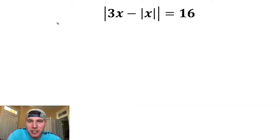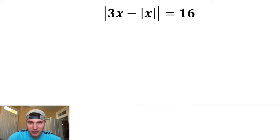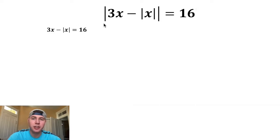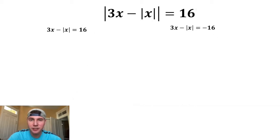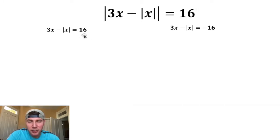Let's solve for x in this equation — it has an absolute value inside of an absolute value. To get rid of the outer absolute value, we take the stuff inside and set it equal to 16, because if it equals 16 the statement is true. We can also set it equal to negative 16, because that also makes it true. That's how we eliminate absolute value signs: set the inside equal to the positive or negative of what it equals.